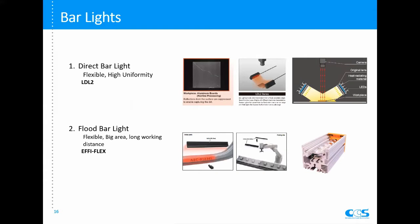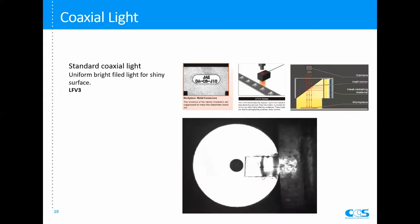The next light is bar light. We have the direct bar light LDL-2 series, which is really compact and flexible — mount it at high angle for bright field or low angle for dark field. The FE flex flood bar light is similar to the FE ring, featuring floodlight application for long working distance and big coverage, such as in automotive, logistics, or robot picking applications. The last light is the coaxial light. This light is really good for getting a bright field image on shiny surfaces — for example, metal surfaces. If we use a ring light we get glare, but with the coaxial light we get a very uniform bright field image.